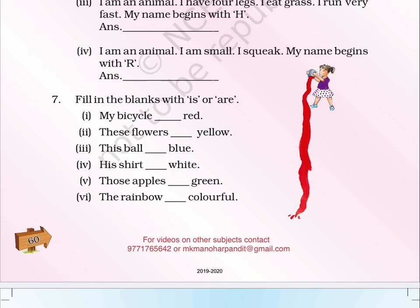Fill in the blanks with IS or ARE. 1. My bicycle ___ red. 2. These flowers ___ yellow. 3. This ball ___ blue. 4. His shirt ___ white. 5. Those apples ___ green. 6. The rainbow ___ colourful. Thank you.